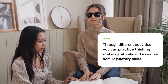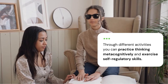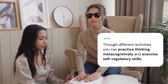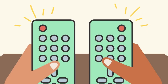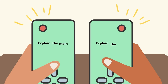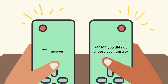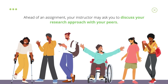Through different activities and lines of questioning, you have the opportunity to practice thinking metacognitively and exercise self-regulatory skills. For example, after you answer a clicker question in class, your instructor may ask you to turn to the person next to you and explain the main reason for choosing your answer and why you did not choose each of the other answers. Or ahead of an assignment, your instructor may ask you to discuss your research approach with your peers and your plan for completing the upcoming assignment.